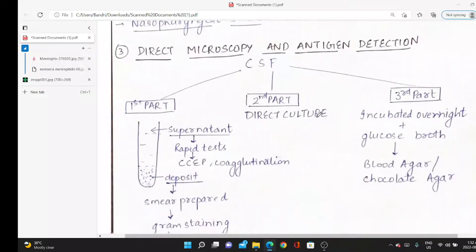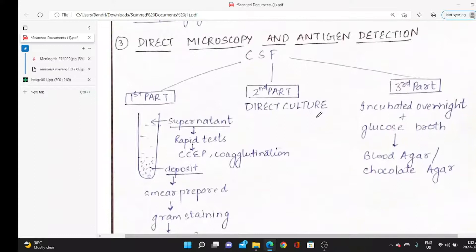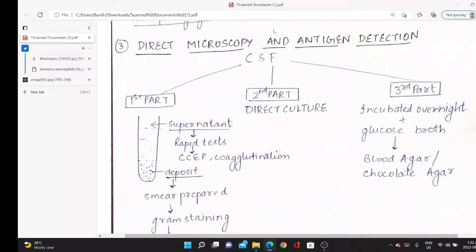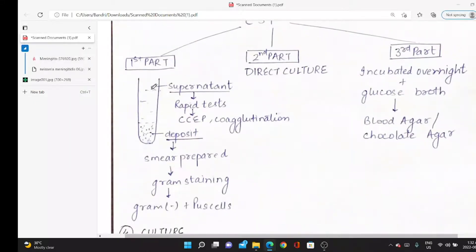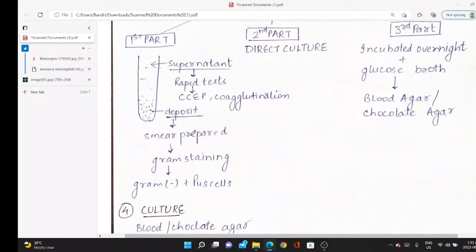We do direct microscopy and antigen detection. For CSF, we do three parts. First part: centrifuge. There's supernatant in the upper layer and deposit in the lower layer. We use supernatant for rapid tests. The deposit: we make a smear, do gram staining, and see gram negative with some pus cells.